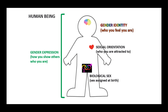To sum it up, we have this illustration of a human being. It shows gender identity — who you feel you are — sexual orientation — who you are attracted to — and biological sex, or the sex assigned at birth. This all comes together into a package of gender expression, or how you show others who you are.